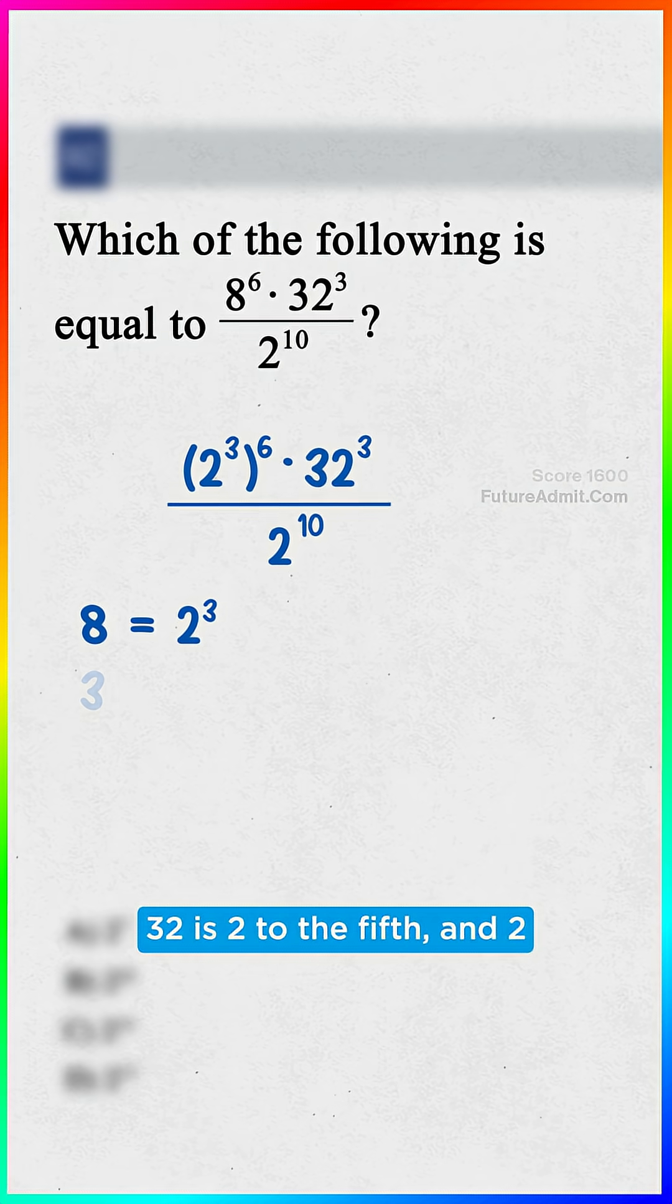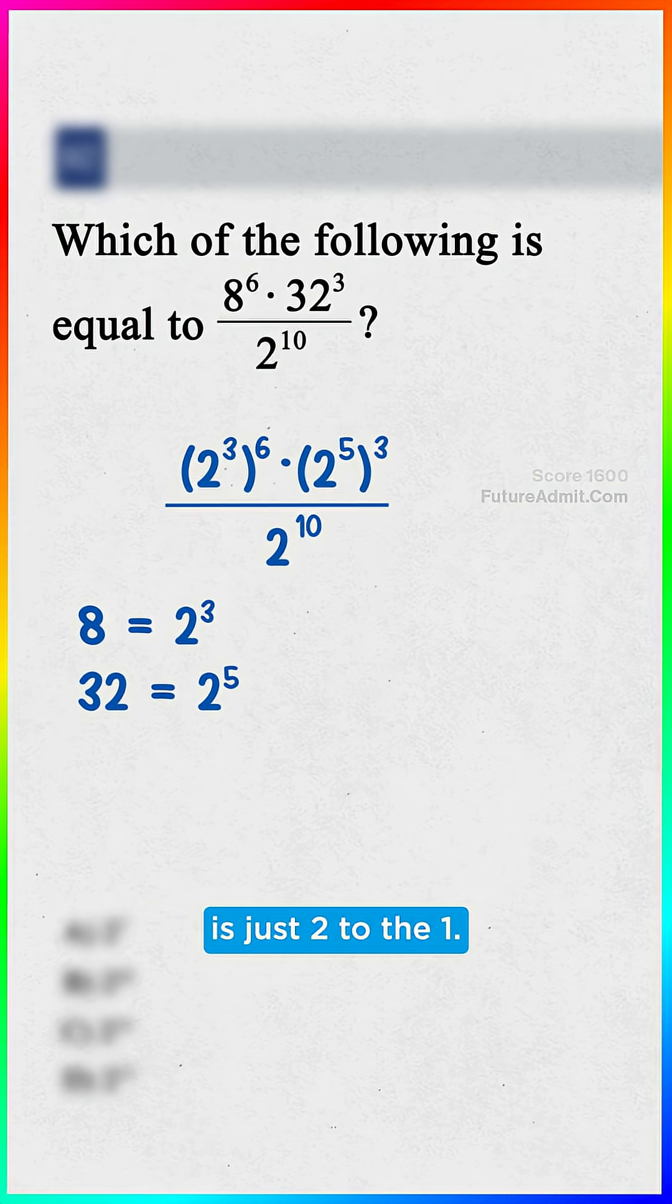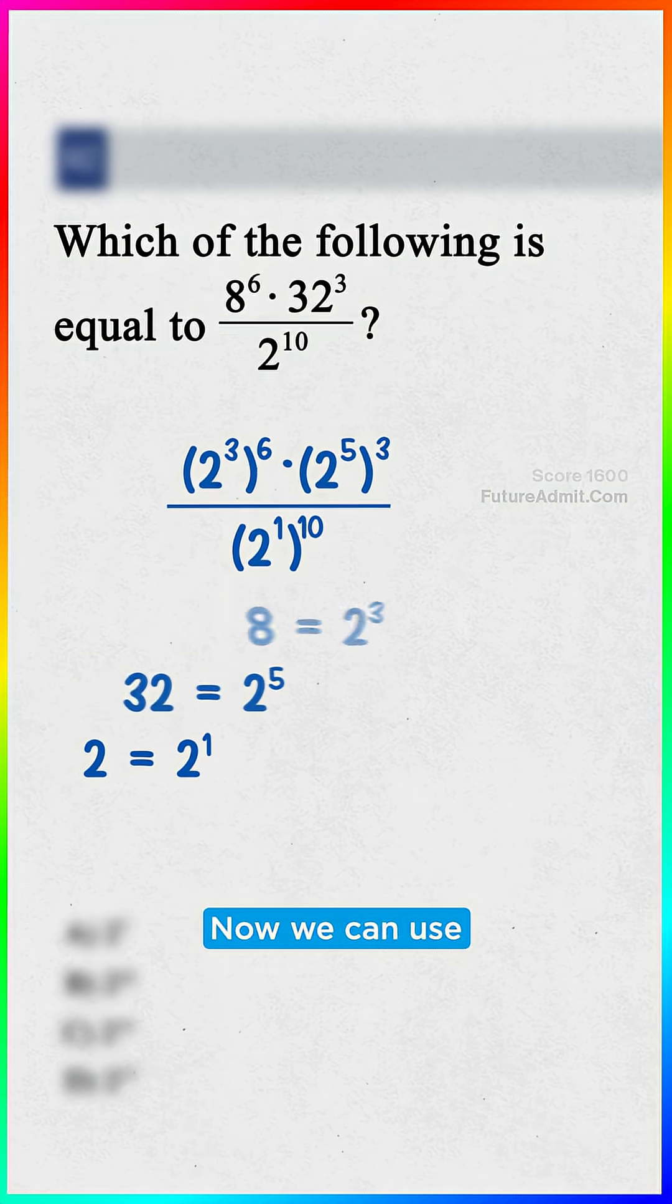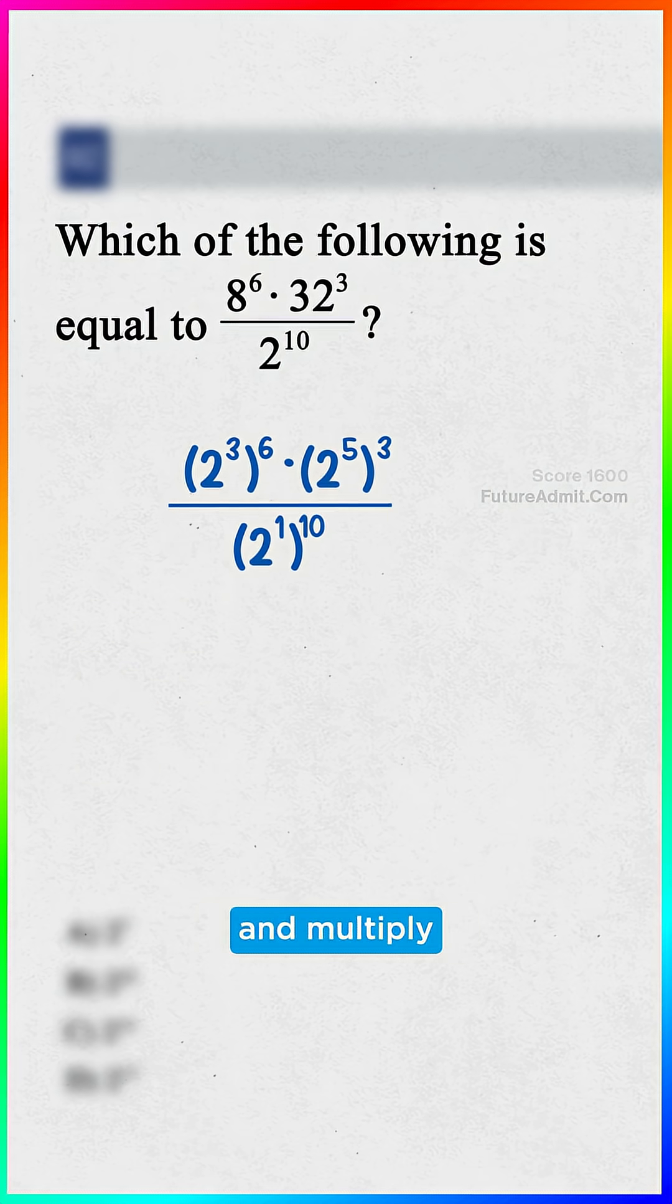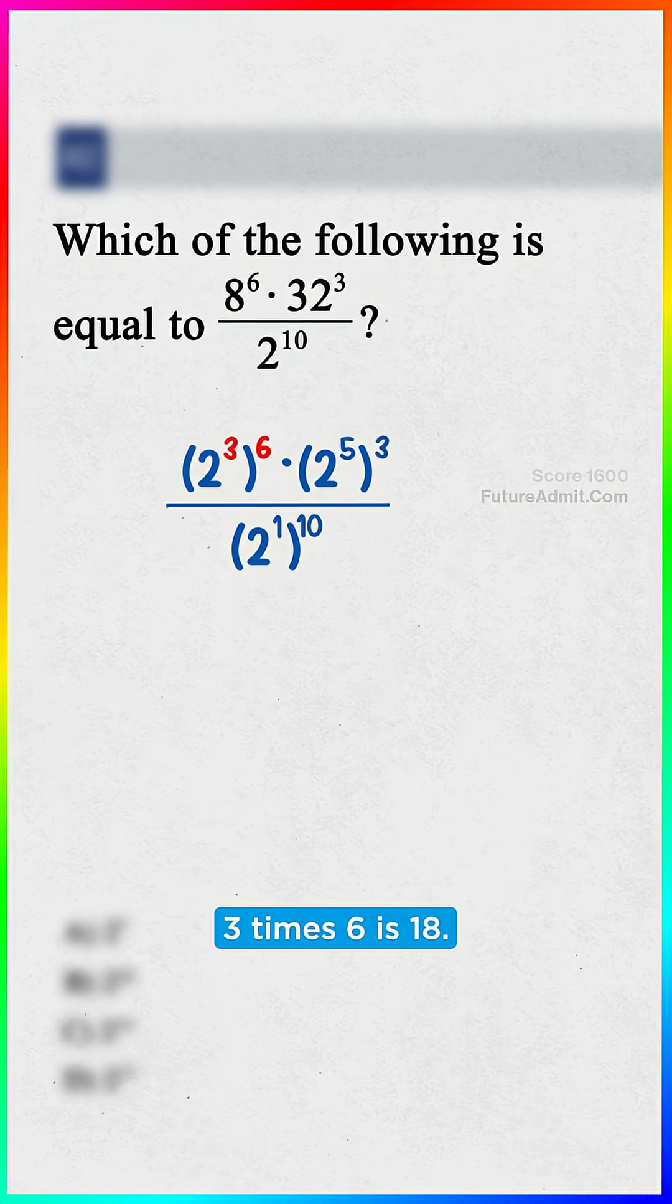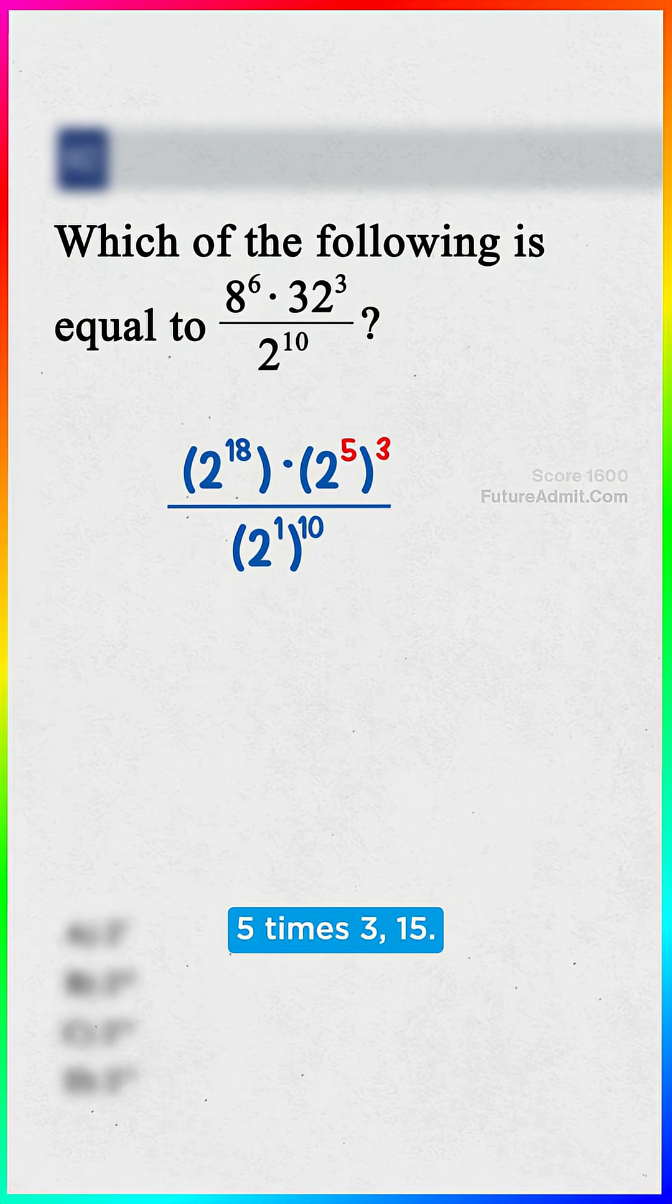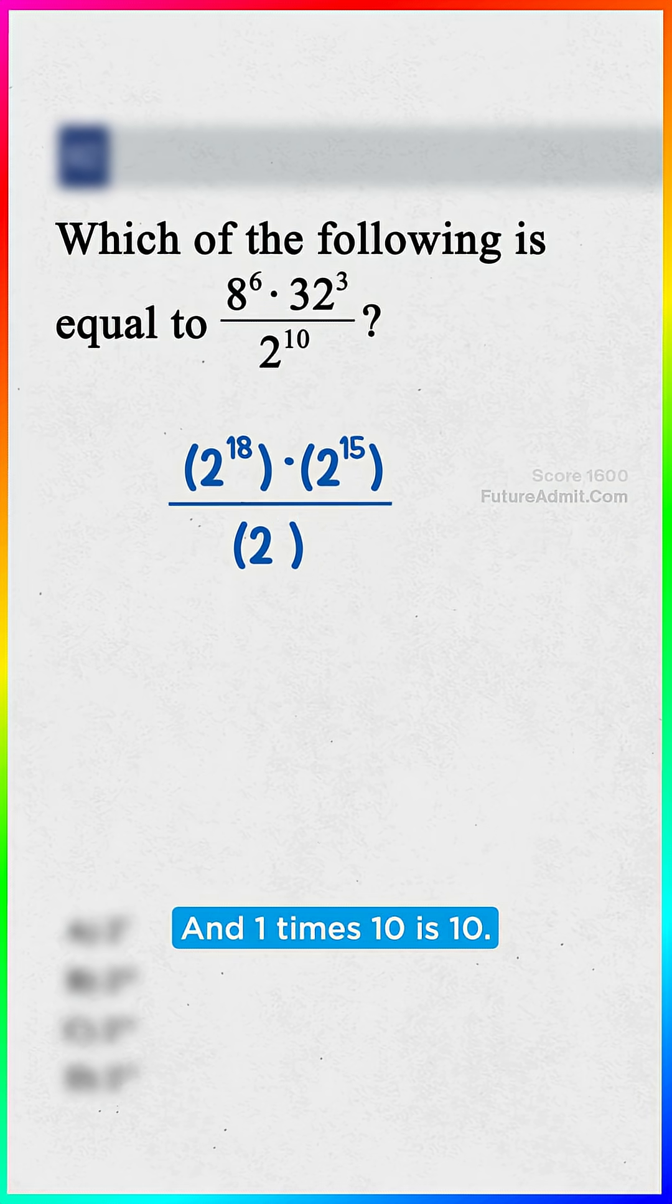8 is 2 cubed, 32 is 2 to the 5th, and 2 is just 2 to the 1. Now we can use our exponent rules and multiply the powers together. 3 times 6 is 18, 5 times 3 is 15, and 1 times 10 is 10.